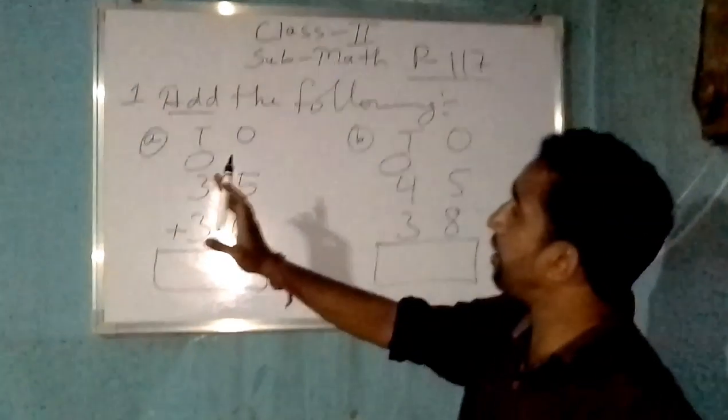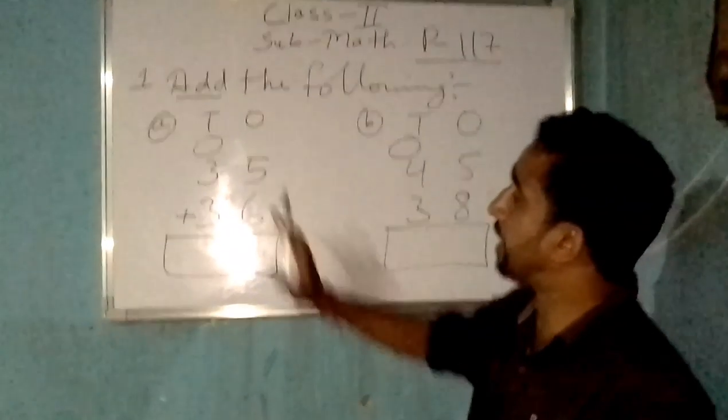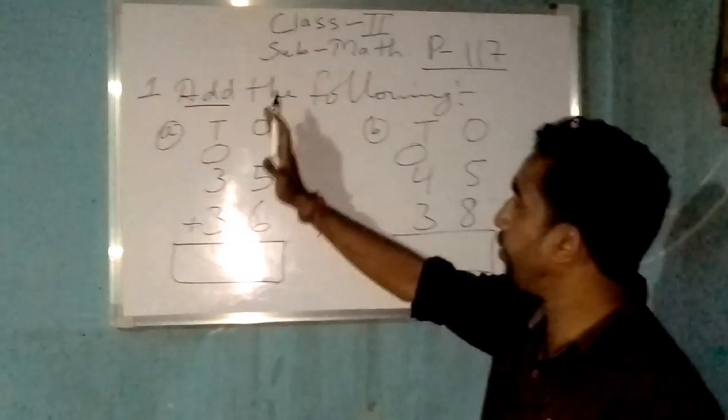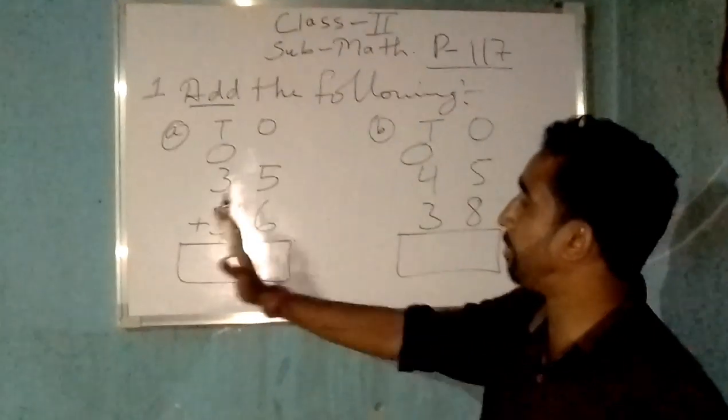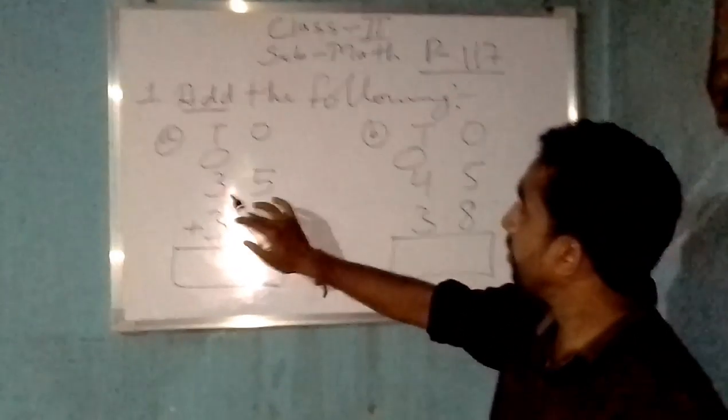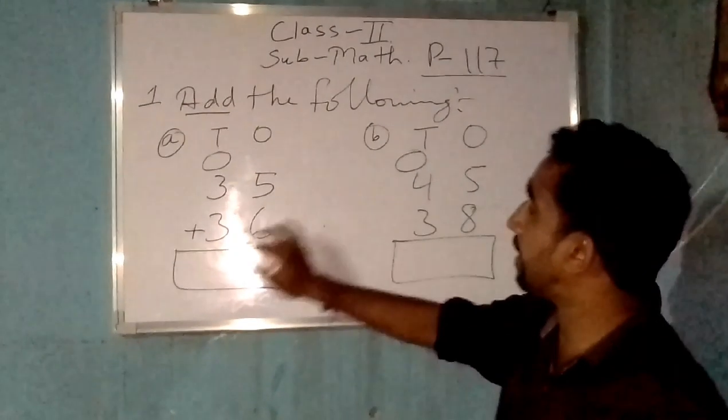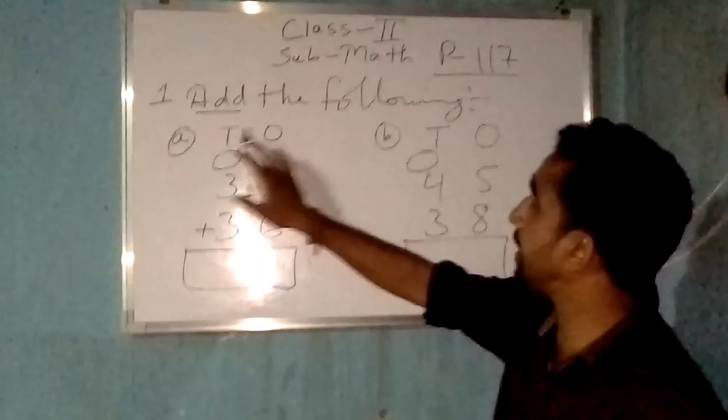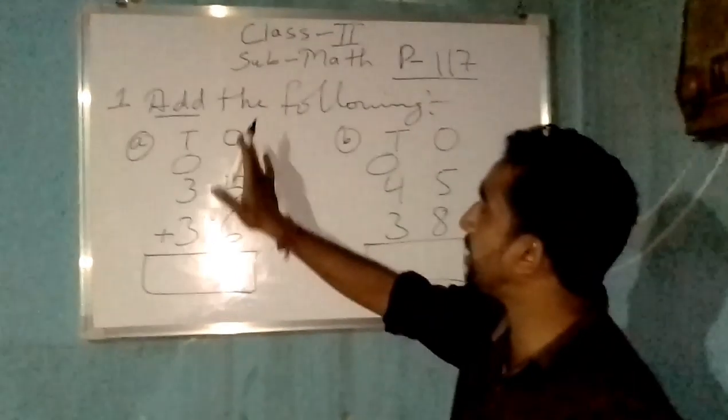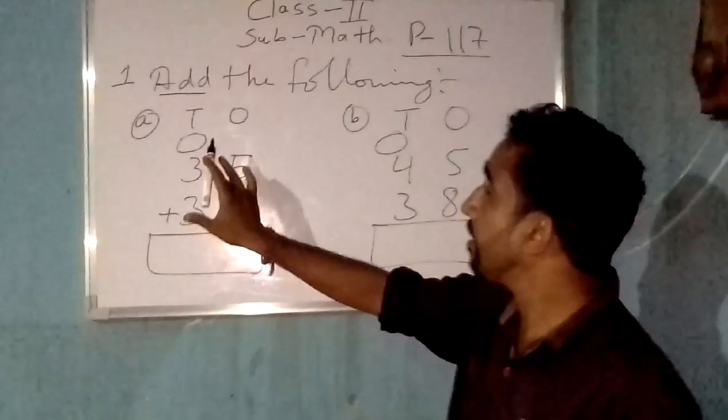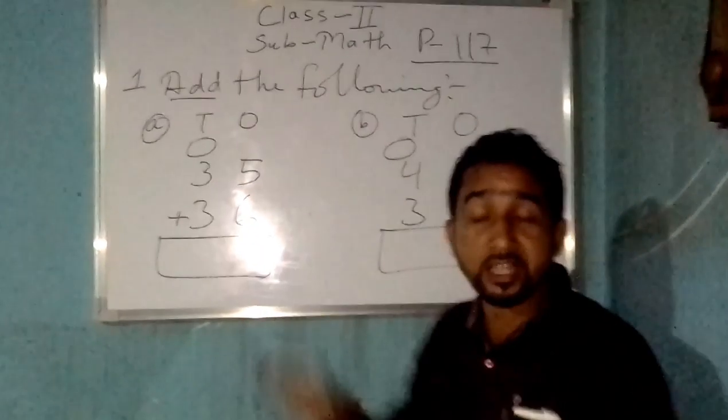Here in question number A we have two digit addition. One place and this is 10 place. This row is one place and this row is 10 place. You can see here the numbers are like 35 and here it is plus 36. But beside this T and O, which means 10 and one place, one more extra circle is there which is unknown to us. Why is this circle here?